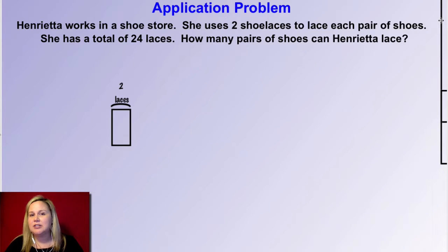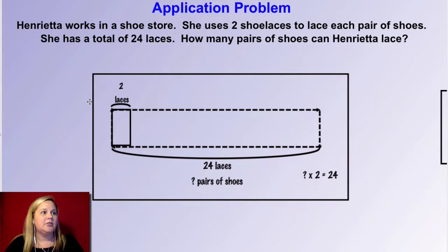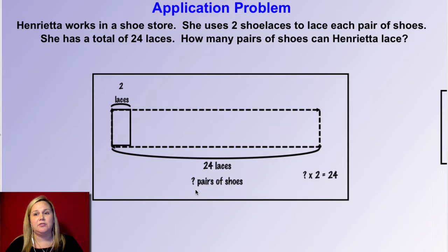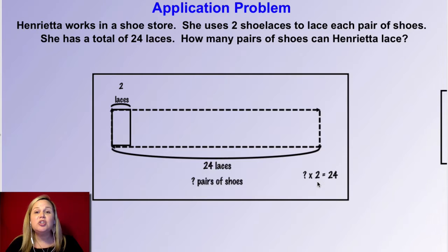So let's see what I did. With this problem, I want to break apart my tape diagram into groups of two laces each. I've labeled my tape diagram so that one unit is two laces. The total is 24 laces, and I'm trying to figure out the number of pairs of shoes she has. I'm going to use multiplication to help: blank times two equals 24, because 24 is my total and two is how many are in each group. I need to find the question mark — the number of groups. I'm going to skip count as I break apart this tape diagram.